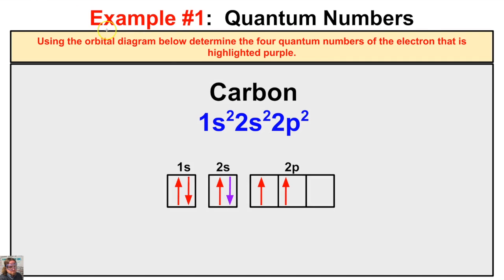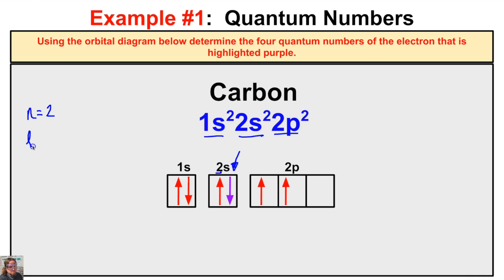In the first example, using the orbital diagram below, we determine the four quantum numbers of the electron highlighted in purple. We need to find the atomic address for this electron in the carbon atom. The electron configuration is 1s² 2s² 2p², and we have the orbital box diagram drawn. We want to find the quantum numbers for the purple electron in the 2s orbital. First, n: this electron is in the second energy level, so n equals two.